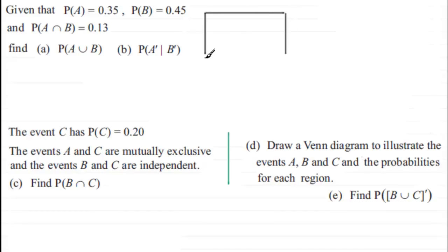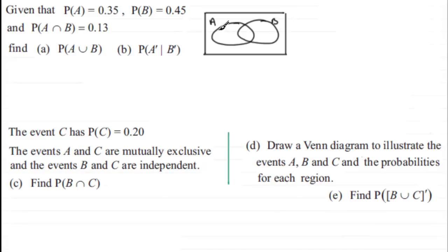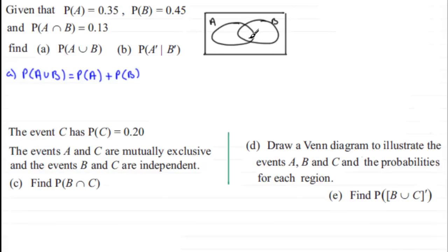Taking two events A and B in general — here's event A and here's event B — P(A∪B) refers to the area within all of A and all of B. The formula is: P(A∪B) = P(A) + P(B) − P(A∩B), because we've counted the overlap twice and need to subtract it once.